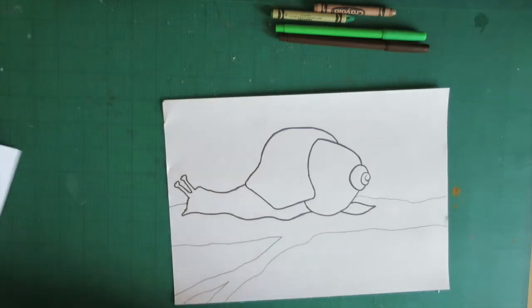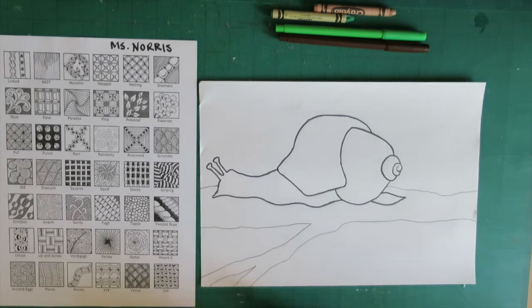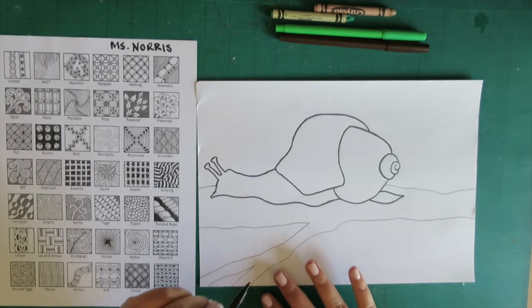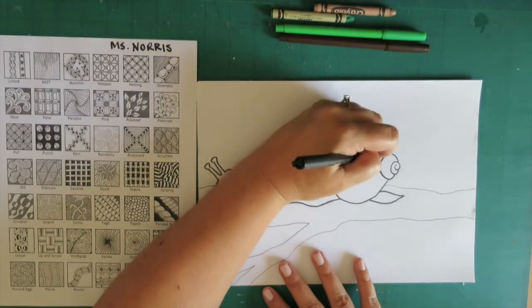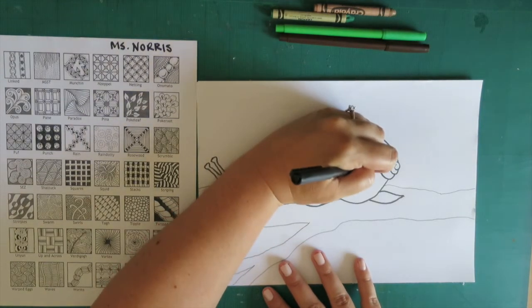Then we're going to take our example of Zentangles if you need examples and start creating the different patterns. You can break up your shell into different sections if that helps you.